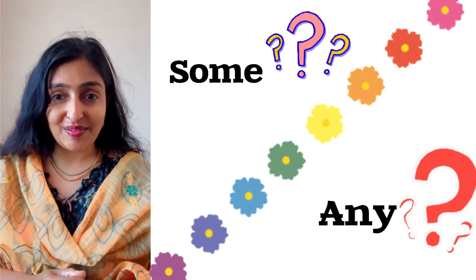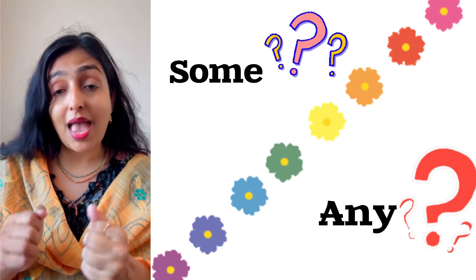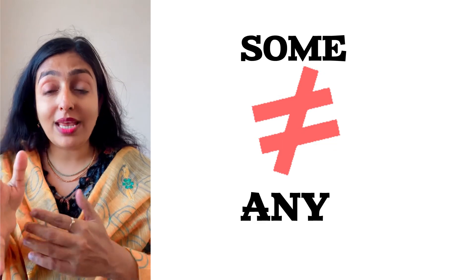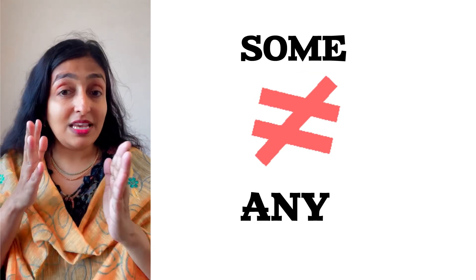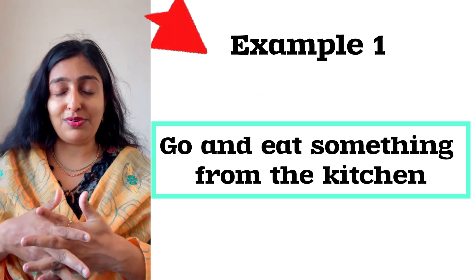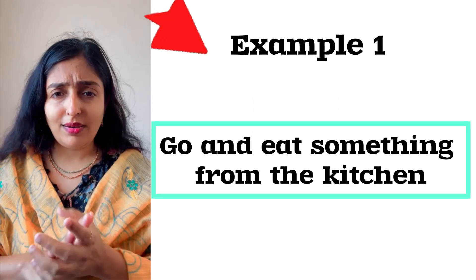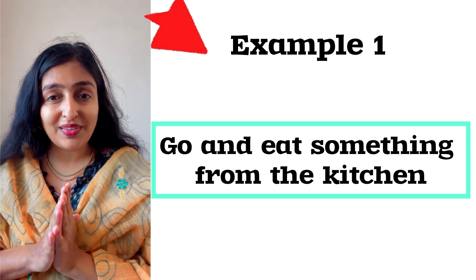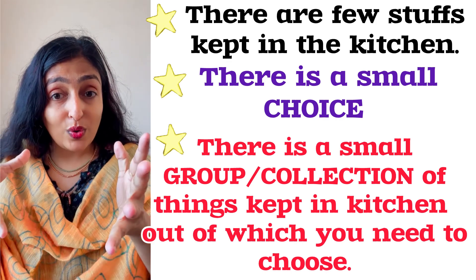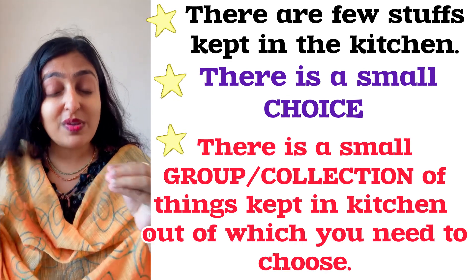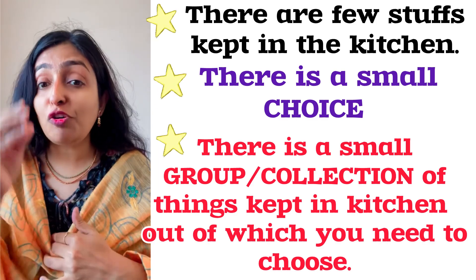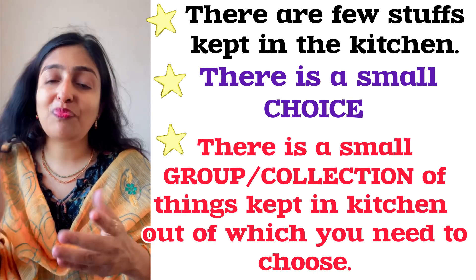Some versus any — the difference between some and any. What is that minute distinction? I'll give you an example to make it clearer. Go and eat something from the kitchen. It means there are few things kept in the kitchen, so you have less choice. There is a small group or collection of things kept in the kitchen out of which you have to select and eat.